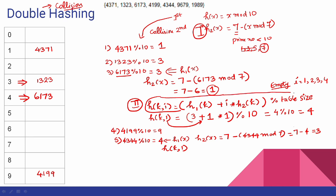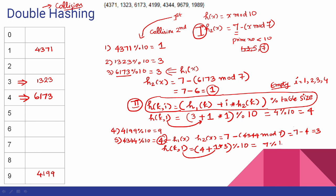The second formula: h(k, i) = h1(k) + i × h2(k) mod table_size. h1(k) is 4. With i = 1 and h2(k) mod value is 3: 4 plus 1 times 3 mod 10 equals 7 mod 10, which is 7. So location 7 gets 4344. So 4344 mod 10 is confirmed.